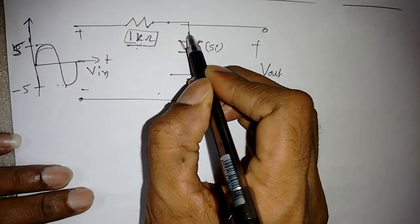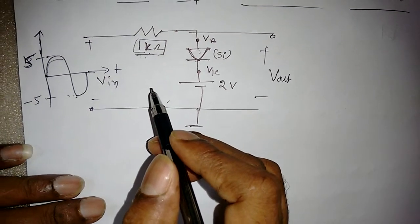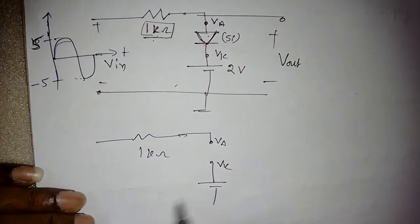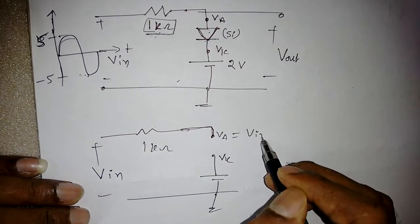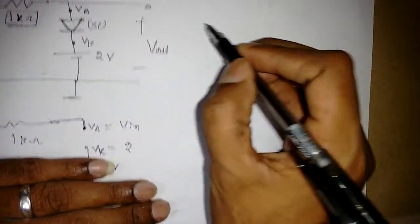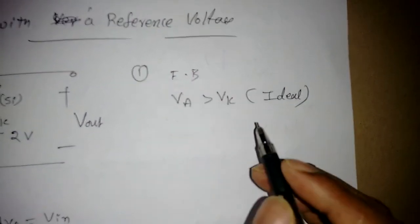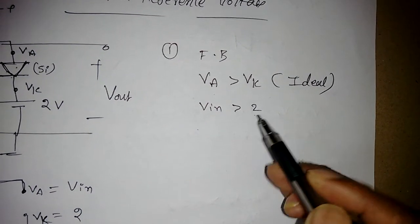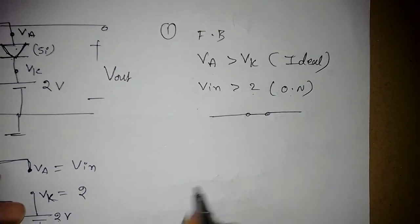Now let's analyze the operation. First, find the anode voltage VA and cathode voltage VK by opening the diode. VA is connected directly to Vin, so VA equals Vin. VK is connected to the 2V reference, so VK equals 2V. For forward bias with an ideal diode, VA must be greater than VK — that means Vin must be greater than 2V for the diode to turn ON, giving the equivalent model of a short circuit.